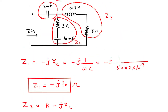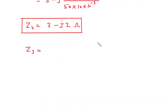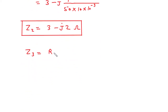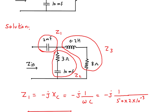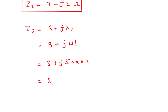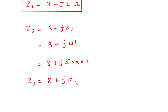Next, Z3 is the series connection of a resistor and inductor. So Z3 = R + j·XL, where XL = ω·L. The resistance is 8 ohms and inductance is 0.2 H. So Z3 = 8 + j·(50 × 0.2) = 8 + j10 ohms.